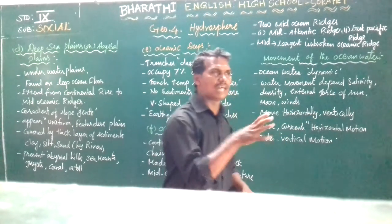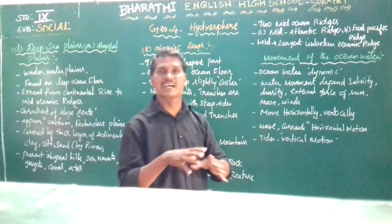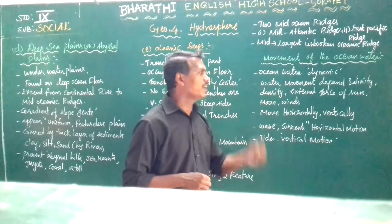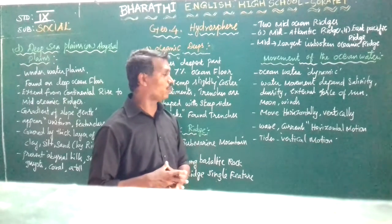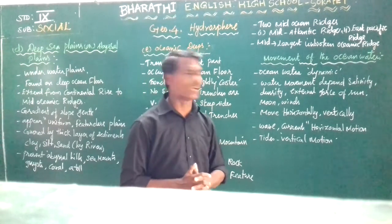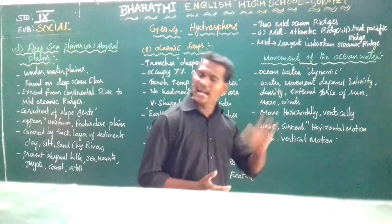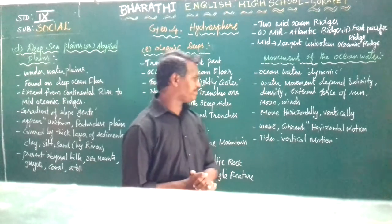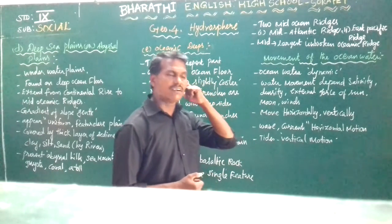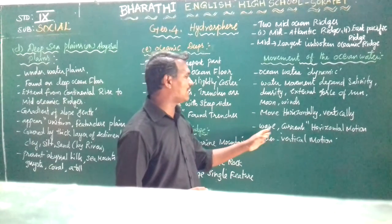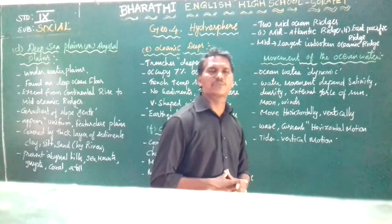The movement of ocean water depends on the external forces of the sun, moon, and wind. Due to these forces, the ocean water moves sometimes very fast and sometimes very slow. The ocean water moves both horizontally and vertically. Waves represent the vertical movement, while currents represent the horizontal movement.